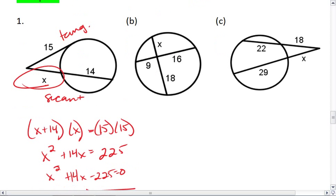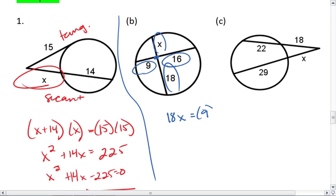All right, let's look at b. In scenario b, we have two chords. So I take each part of my first chord, multiply them together. That's going to equal the second chord's parts multiplied together. 9 times 16 is 144. I want to divide both sides by 18. I get 144 divided by 18, which is 8. And that's my value for x.